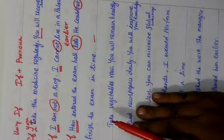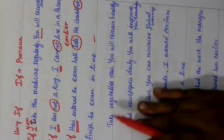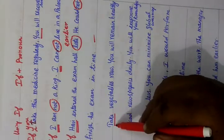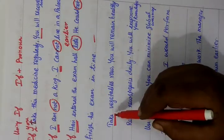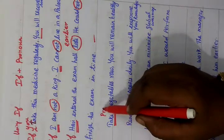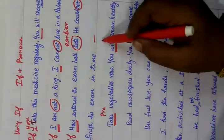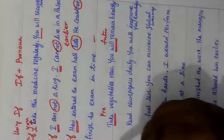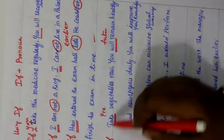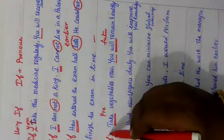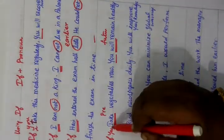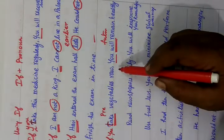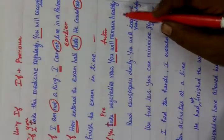Exercise 4: 'Take vegetables raw. You will remain healthy.' This is present tense and future tense. So we write: 'If you take vegetables raw, you will remain healthy.'